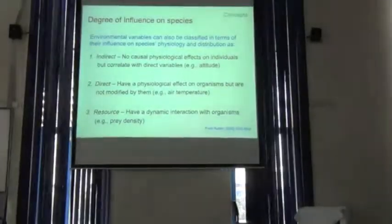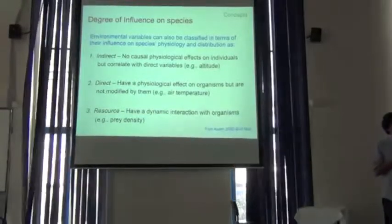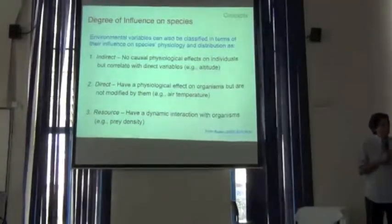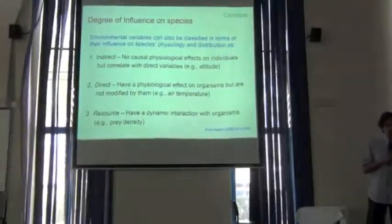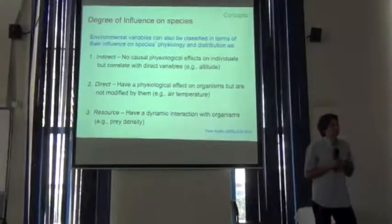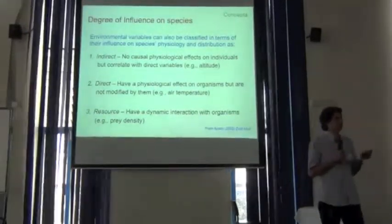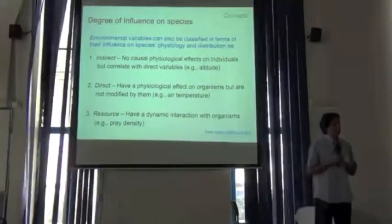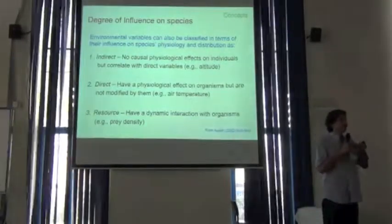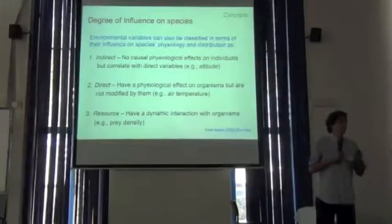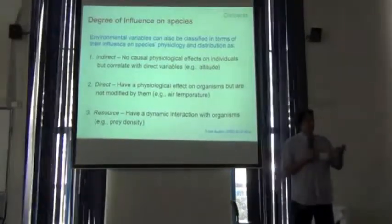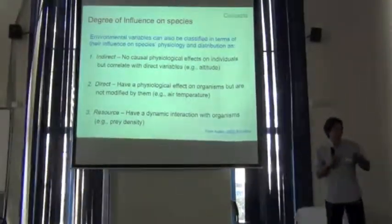There is another way of looking at environmental variables that affect species distribution: whether they have a direct effect or not. Some variables we consider important, like elevation, are not properly variables that directly affect the physiology of a species. But because elevation is correlated with other variables that do — for example, temperature — it becomes a good proxy for understanding and predicting the distribution of the species.